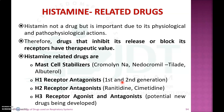There are first-generation and second-generation H1 antagonists, also called antihistamines or conventional antihistamines, which will be discussed in the next video. H2 receptor antagonists like ranitidine and cimetidine are used therapeutically in peptic ulcer. H3 receptor antagonists are potentially new drugs being developed. That concludes our discussion of histamine; the next video will cover H1 and H2 antagonists.